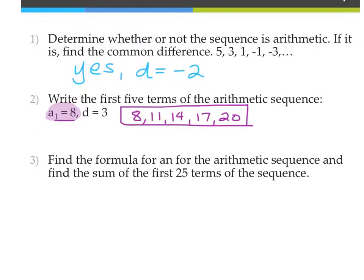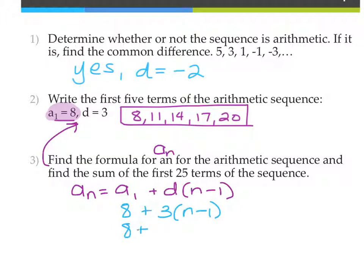Number three says find the formula for, this should be a sub n for the arithmetic sequence, and then find the sum of the first 25 terms of the sequence. So if I'm using, and it's for number two, so find the formula for that one would be a sub n equals a sub 1 plus D times n minus 1. And then I have a sub 1, that's 8. D, which is positive 3, n minus 1, that's 8 plus 3n minus 3, or 5 plus 3n. That's your a sub n, that's the first part.